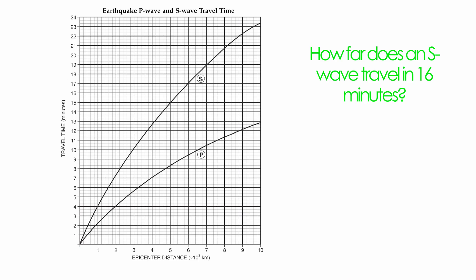You can also get problems like this: how far does an S-Wave travel in 16 minutes? Again, look for keywords and the information given to you. Sixteen minutes is given to you. Follow it over to your S-Wave, then follow it down to get your distance. In this case, it would take your S-Wave sixteen minutes to travel five thousand four hundred kilometers. It's very important to identify the information given to you that you can manipulate right from your chart.